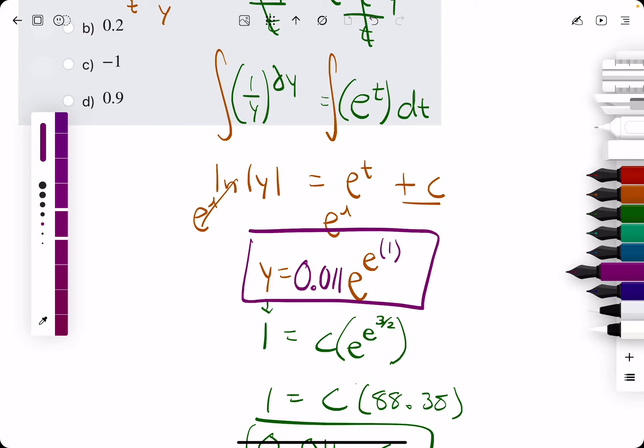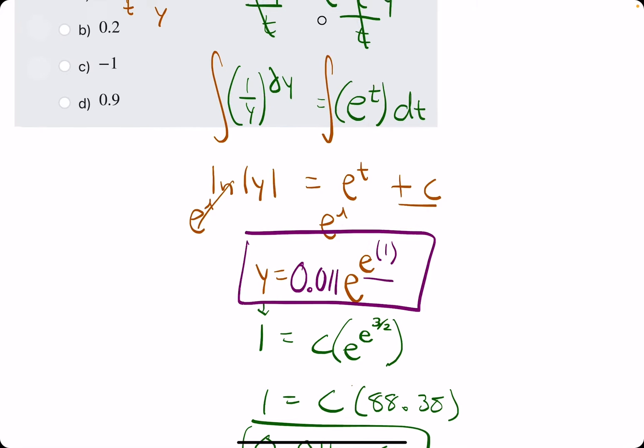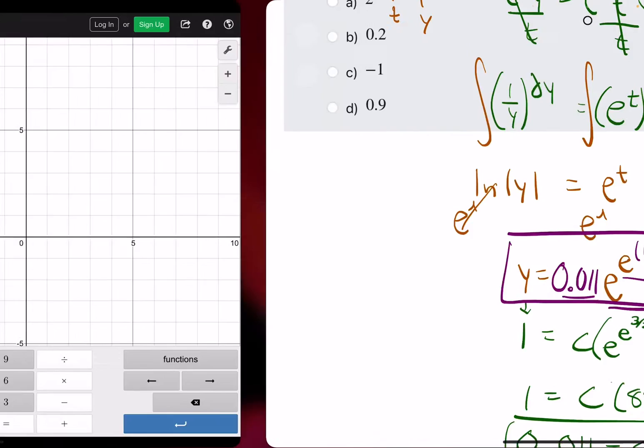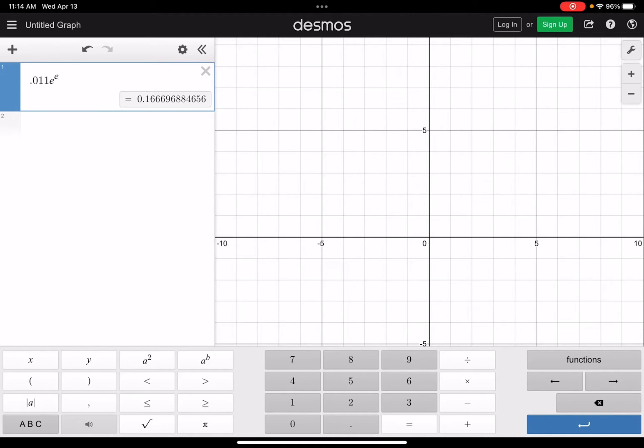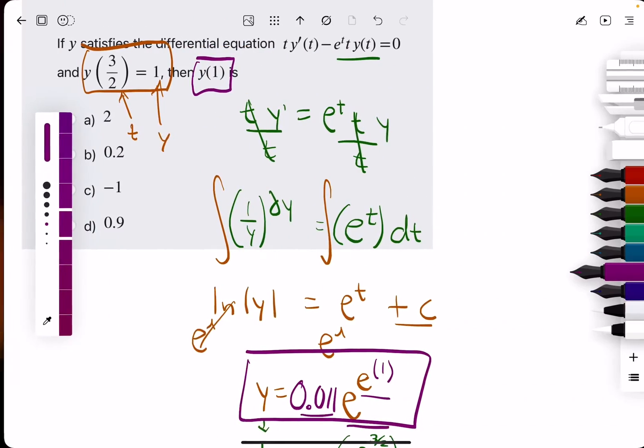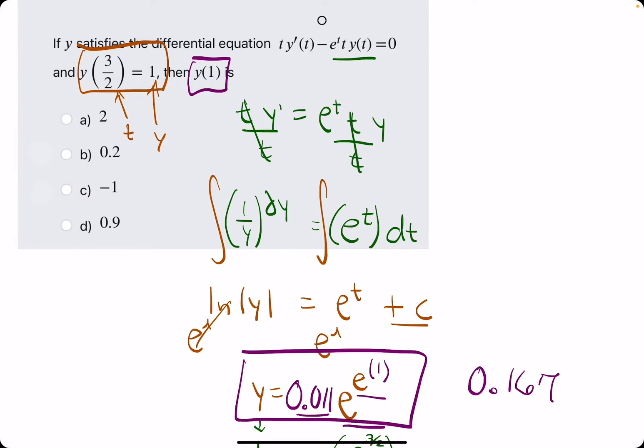And this is what we will plug in to Desmos or Excel, whatever calculator you have accessible to you. So if you are using, you know, p calc, say, on a quiz or whatever, I might recommend working your way from the exponent outward. So starting with e to the first, and then find that as a decimal, and then do e raised to that, and then multiply it by 0.011. But in Desmos, I'm just going to plug it all in at once. So we'll have 0.011 e to the e to the 1. So do we have 0.167 as an answer choice? My guess is maybe 0.2. Pick the closest.